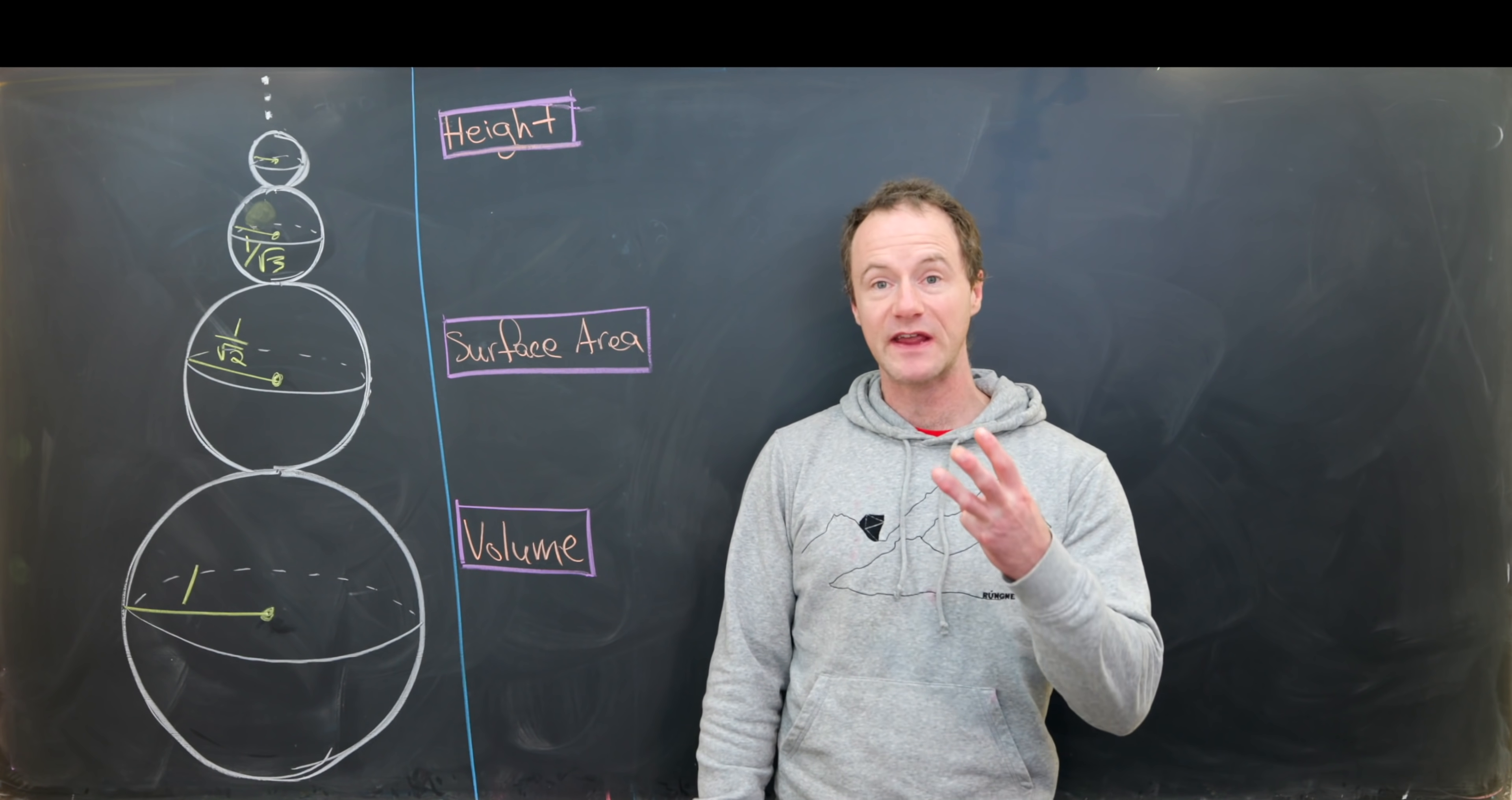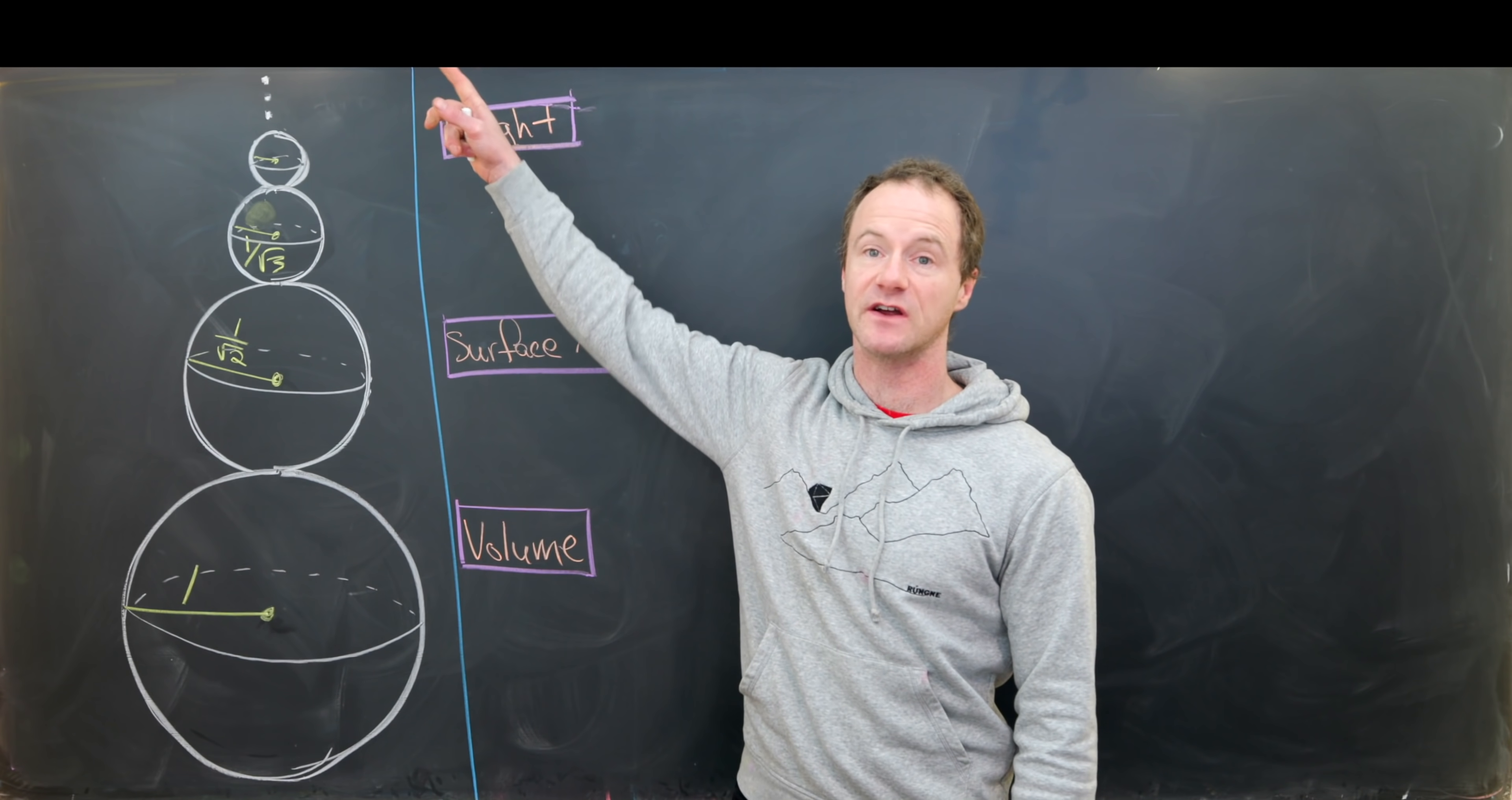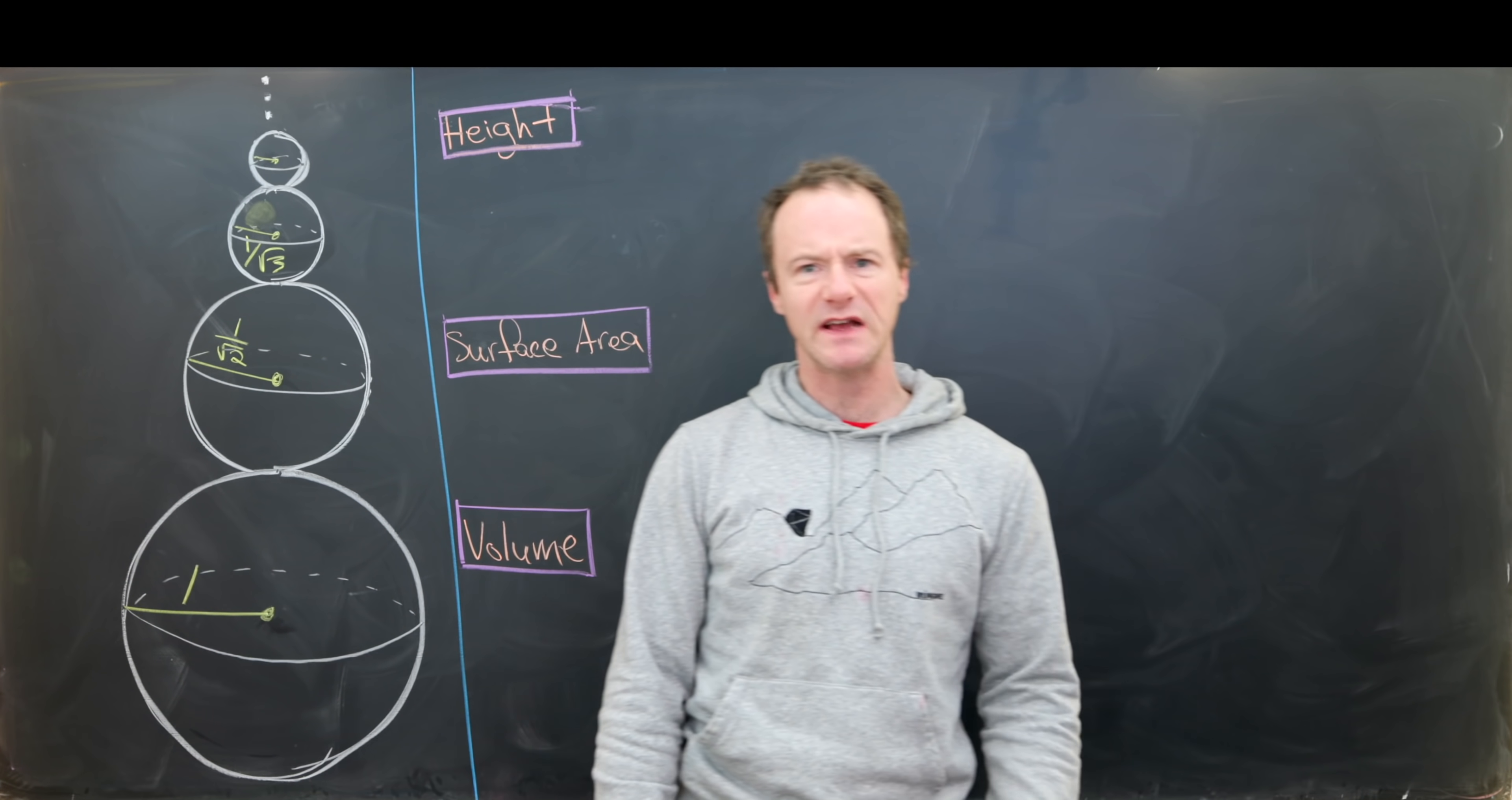And now we're going to take three measurements on this stack of spheres: the height, the surface area, and the volume. And I think this is pretty interesting because this is like a one-dimensional measurement. So in other words, we're measuring from this base down here to the very top of this infinite stack, if there is a top. Then this is a two-dimensional measurement. Notice that'll be the area of the surface of the spheres all added up. And then this is a three-dimensional measurement, this volume. So let's get to it.